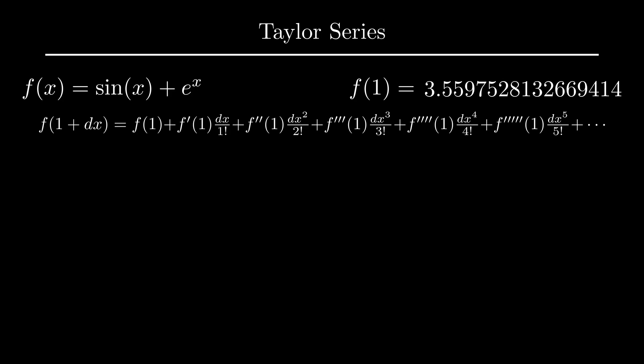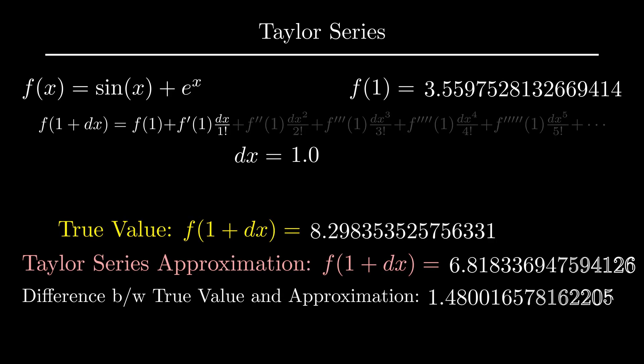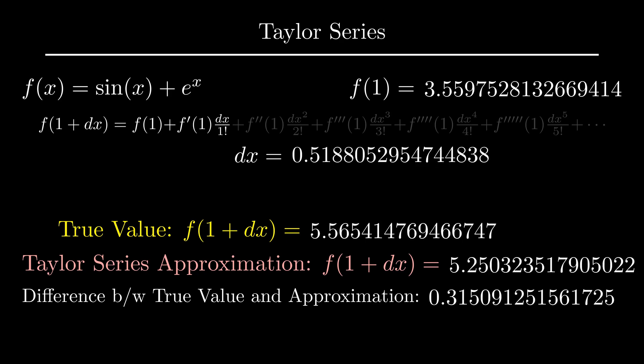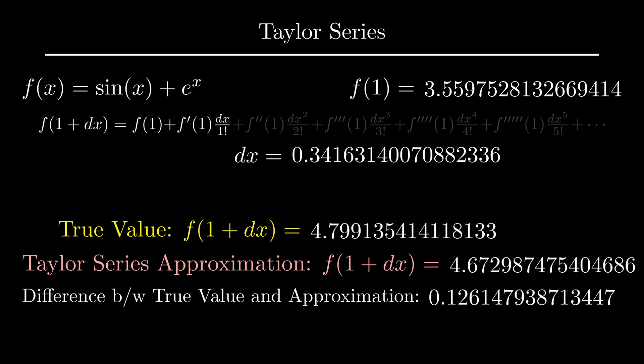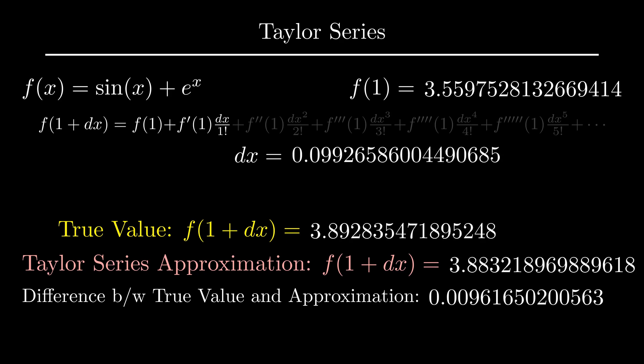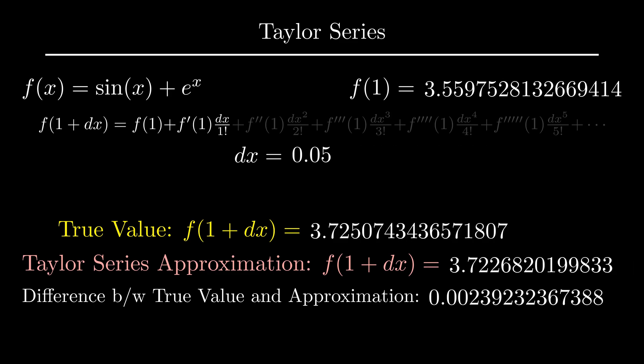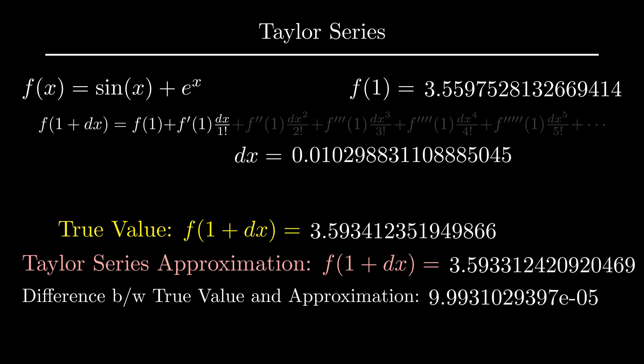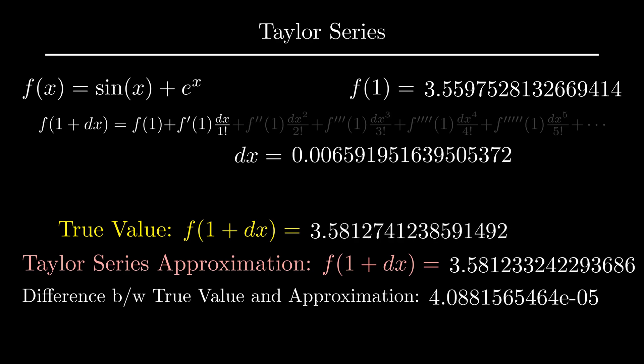How accurate f of x plus dx is depends on two things. Firstly, the dx itself. For now, let's forget all the higher order derivatives in the Taylor series and just keep the first derivative. Now, you can see that the smaller the value of dx, the more accurate the approximation is. See how the true and approximated value gets closer and closer as the dx becomes smaller and smaller.